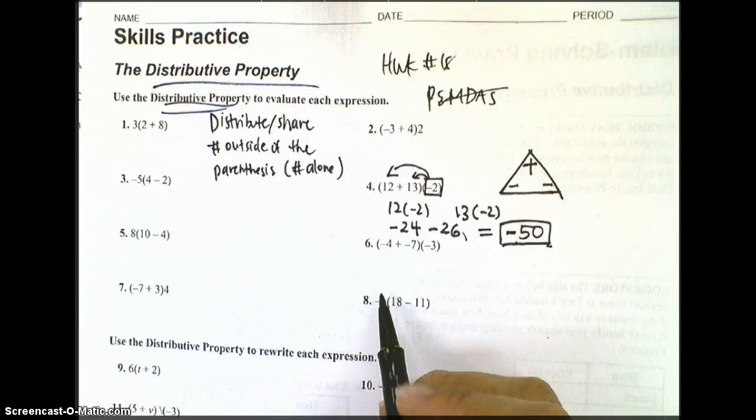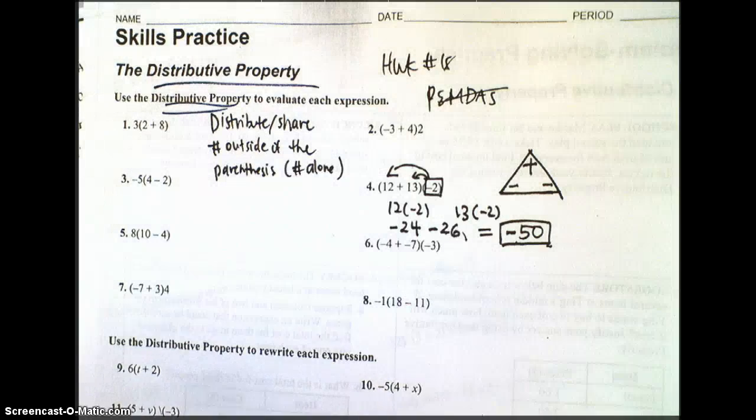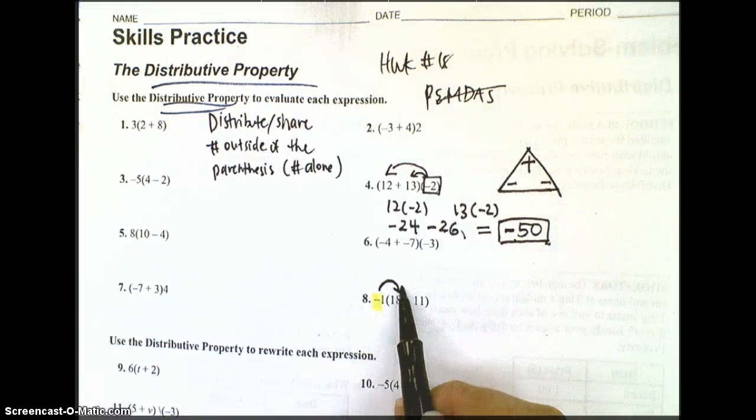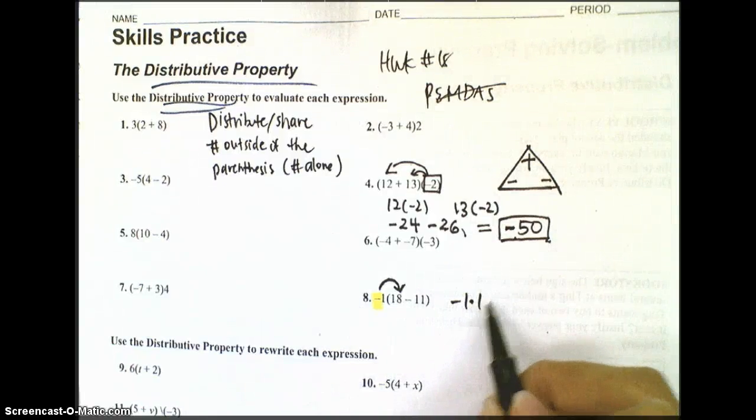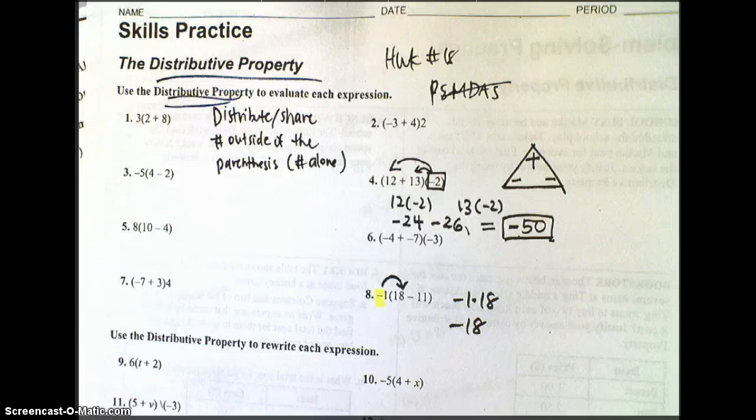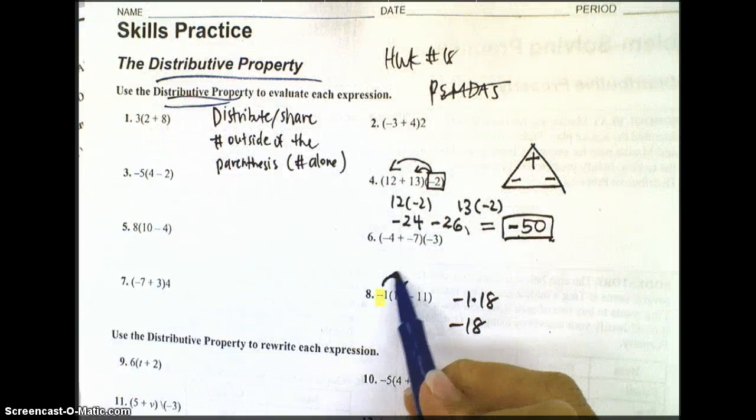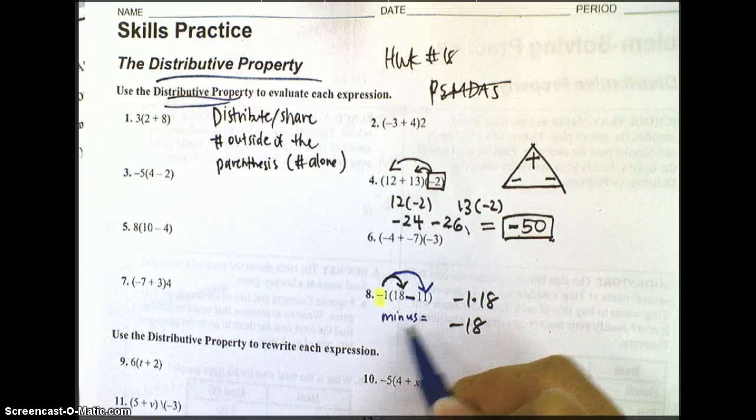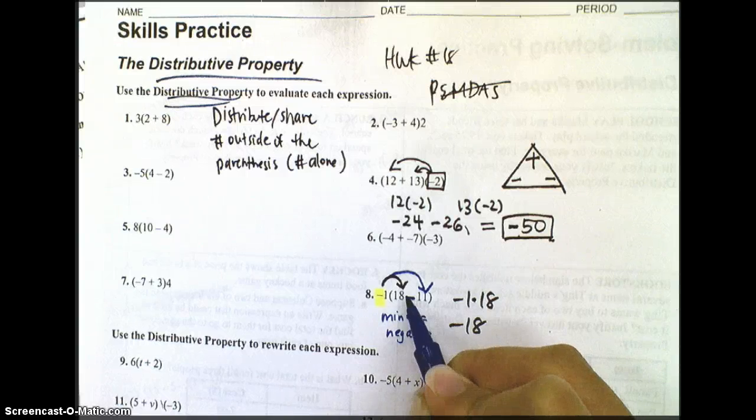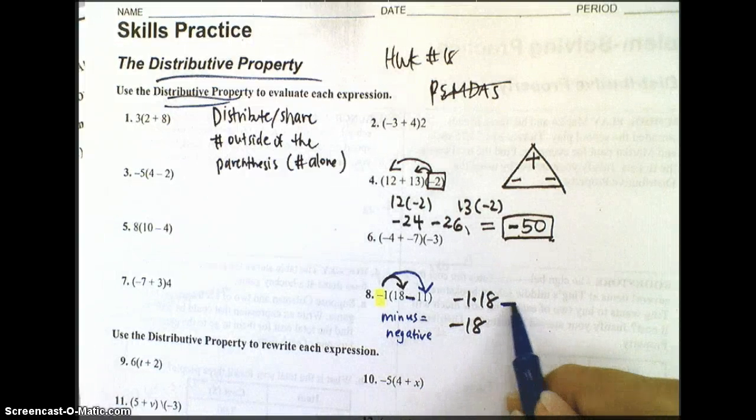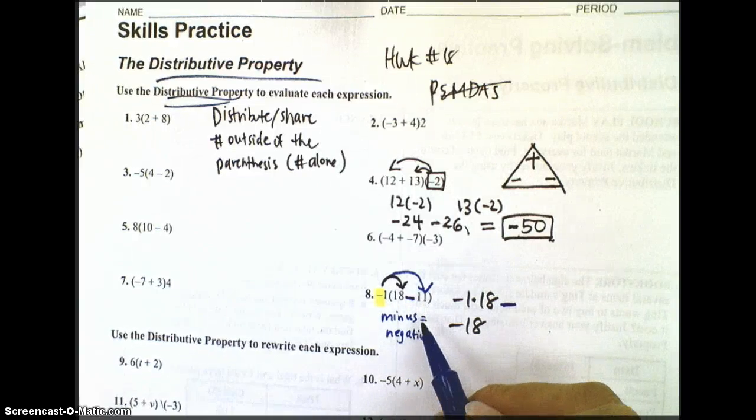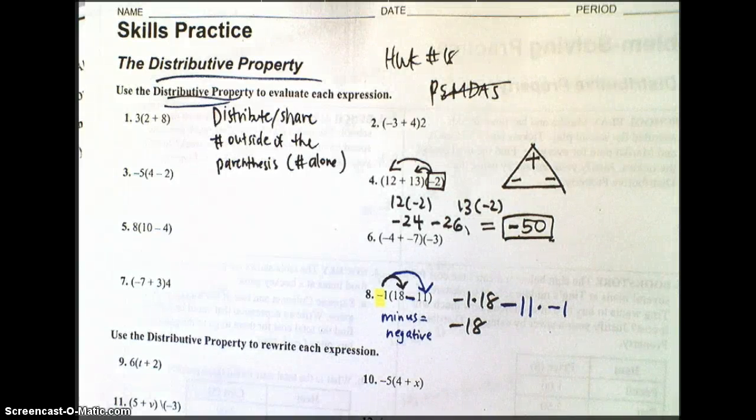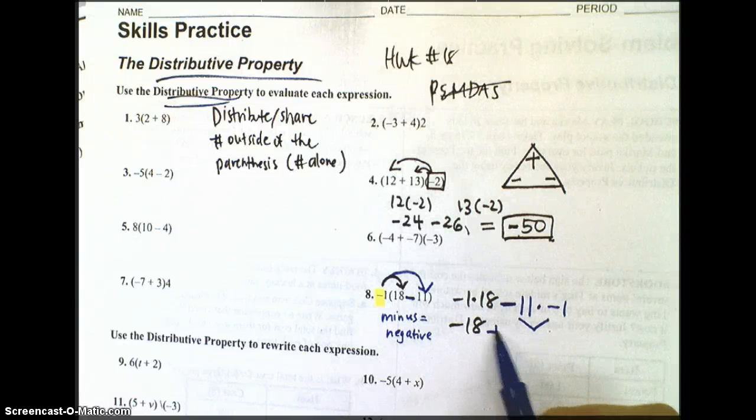In number 8, we're going to similarly distribute. Take the negative 1, which is on the outside of the parentheses, and I'm going to distribute that with everything inside. So the first arrow I'm drawing is negative 1 times 18, which gives me negative 18. Then I'm going to multiply negative 1 with negative 11. Now that minus sign is the same as a negative, so I'm going to do negative 11 times negative 1, and when I do that multiplication, I'm going to get positive 11.